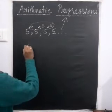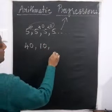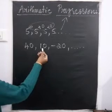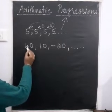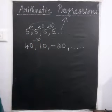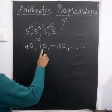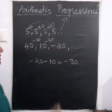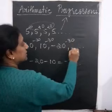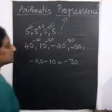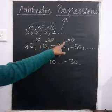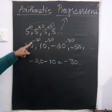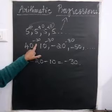If you take the second term minus the first term, you will get minus 30. When you keep subtracting 30, you get the next term and so on. Here we find that the common difference is minus 30, so this also is an AP. From these examples, we find that the common difference can be 0, negative, or positive.